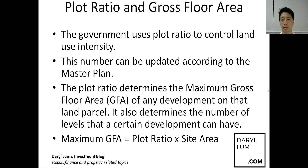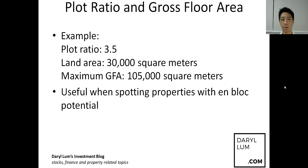Let's take a look at an example. If a certain plot of land has a plot ratio in the master plan of 3.5, and the land area is 30,000 square meters, then the maximum GFA that can be built is 30,000 times 3.5, which is 105,000 square meters. This means the developer can build a building with a gross floor area of 105,000 square meters on that 30,000 square meter plot.